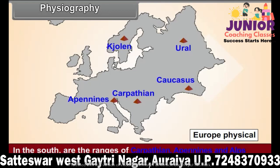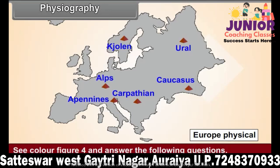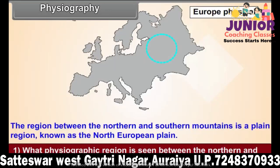Question 1: What physiographic region is seen between the northern and southern mountains? Question 2: In which direction do the Scandinavian Mountains slope gently? Question 3: Write the names of 4 mountains from the continent along with the direction in which they spread. Question 4: List any 5 peaks from the continent along with their height in descending order.